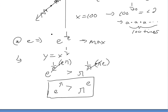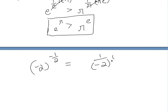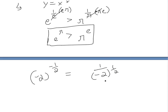For negative x values, you'd have something like negative two to the power of negative one over two, which is one over the square root of negative two. So you're dealing with negative square roots, which require imaginary numbers — where i squared equals negative one.